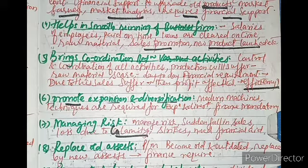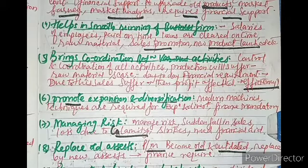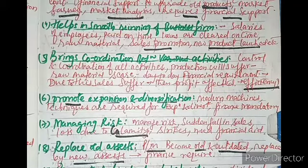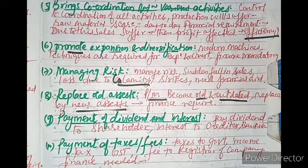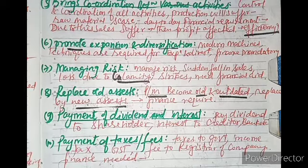Eighth point: replace old assets. Ninth point: payment of dividend and interest. Finance is needed for any company to pay dividends to shareholders or interest to creditors or banks on time. For this, corporate finance is required.